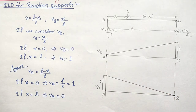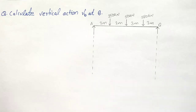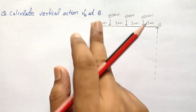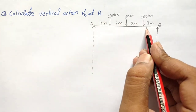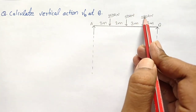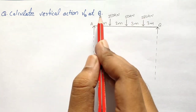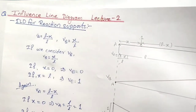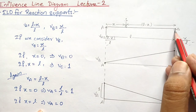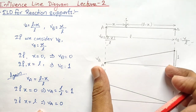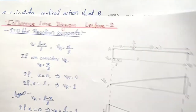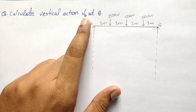Here is a question in which we are asked to calculate the vertical reaction VB at B. We are given a simply supported beam of span 10 meters carrying three point loads: 150 kN, 50 kN, and 180 kN. To calculate VB we need to draw the influence line diagram. Whenever we calculate the vertical reaction at a support, we draw a triangle with value 1 at that support and 0 at the opposite support.